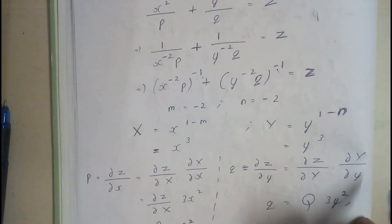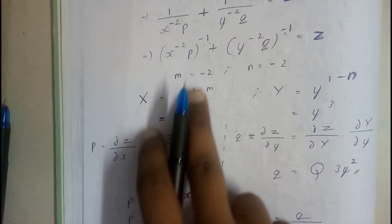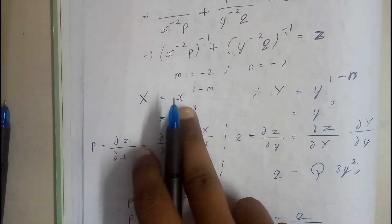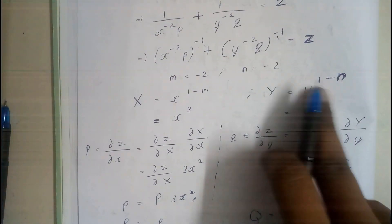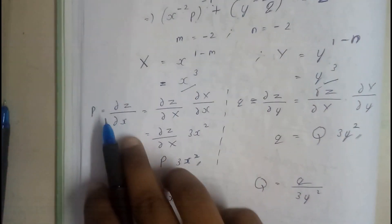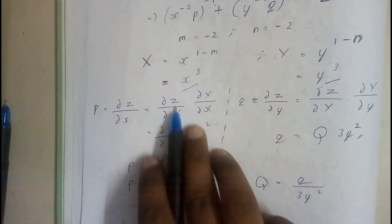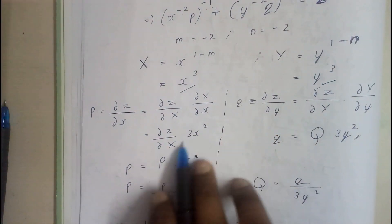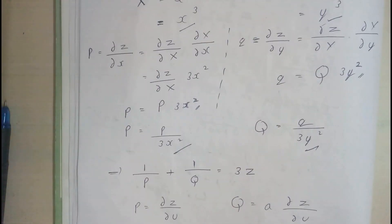In the previous problem m=n=1 gave capital X = log x and capital Y = log y. Here m=n=−2, so we substitute capital X = x^(1−m) = x³ and capital Y = y^(1−n) = y³. We then differentiate: p = ∂z/∂x = ∂z/∂X · ∂X/∂x, finding capital P; and similarly finding capital Q.